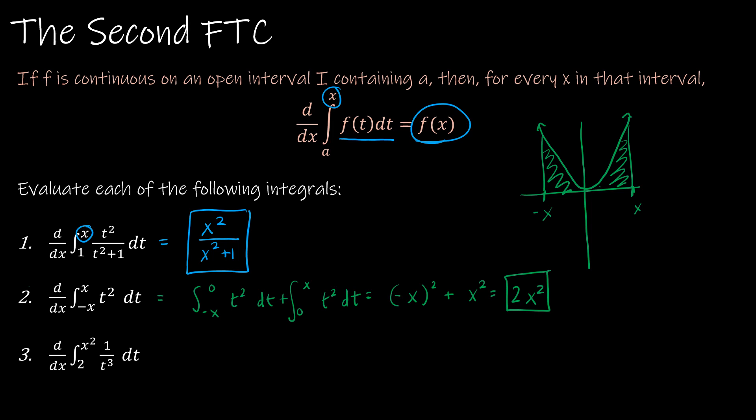And for the last one, again, this is 2 to X squared, so you would think that we would be okay to just say this is 1 over X squared cubed, which is 1 over X to the 6th. And you're almost right.